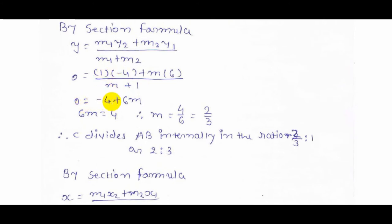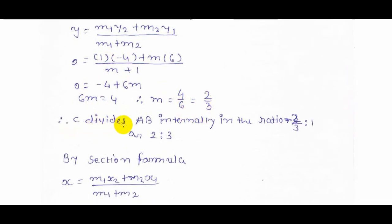0 = -4 + 6m, so 6m = 4. Now m = 4/6 = 2/3. Now C divides the line AB internally in the ratio of 2:3 or 2 ratio 3.